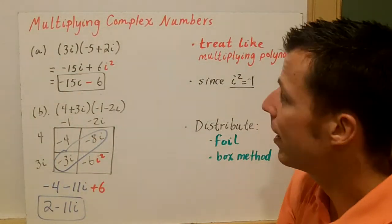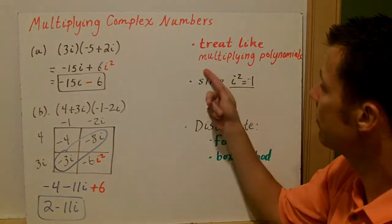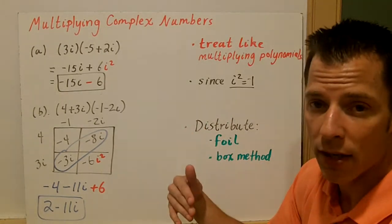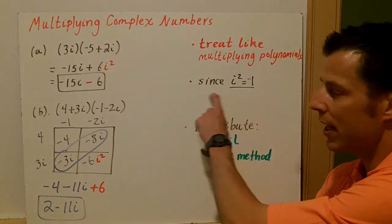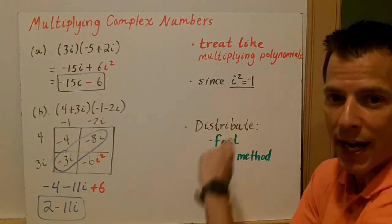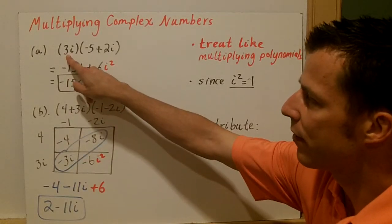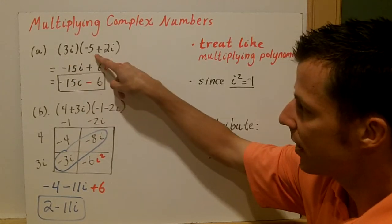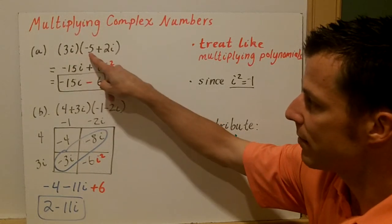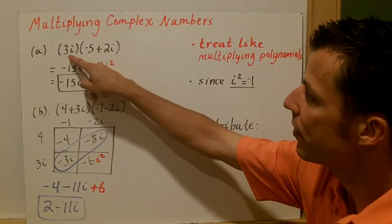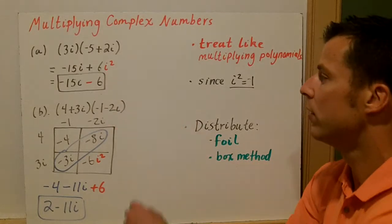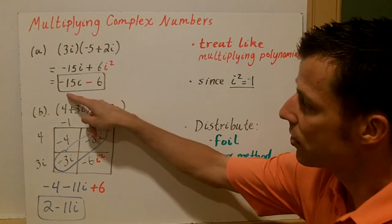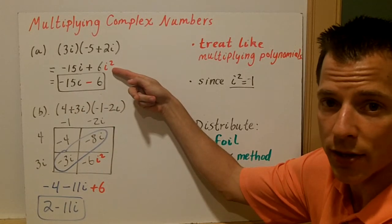When we multiply, it's really the same thing as when we're working with polynomials — treat them like you're multiplying polynomials. You've got to be really careful because if we have multiplying with an imaginary part, we're going to get i squared. In example a, we have 3i times the quantity negative five plus two-i. This is a pure imaginary number times an imaginary number. Distribute the 3i: 3i times negative five is negative 15i, and 3i times 2i is 6i squared. Since i squared equals negative one, 6i squared becomes negative six. So our final result is negative six minus 15i.